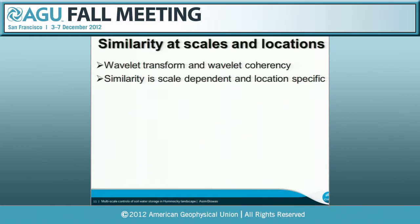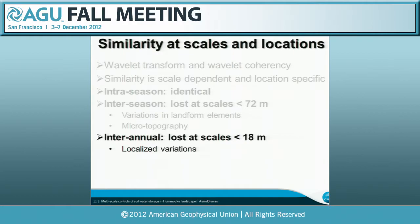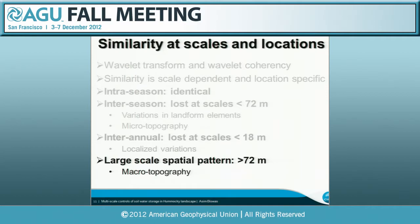I also examined at what scale and location this similarity occurs, using wavelet transform and wavelet coherency. I found the similarity is very scale-dependent. Within a season (intra-season), they are identical at all scales. But between seasons, similarity is lost at scales less than 72 meters — mainly due to variations in landform elements or microtopographical variation. Inter-annual variation lost similarity at a very small scale, less than 18 meters, mainly due to localized variation in soil water storage. The large-scale spatial pattern, greater than 72 meters, representing macrotopographical variation at the landscape level, is present at all times and all depths.